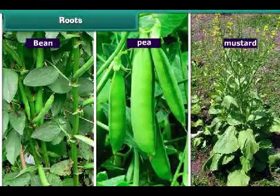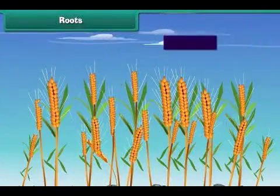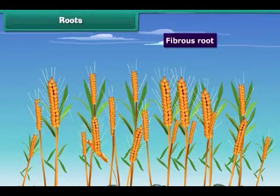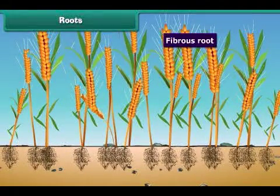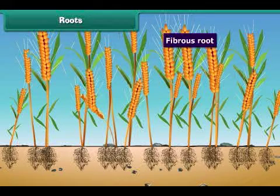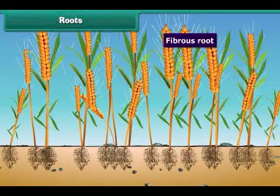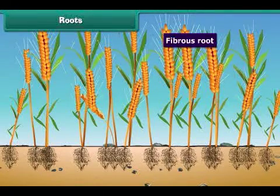But in a fibrous root, a number of almost equal-sized roots are attached to the end of the stem. That is, there is no main root like a tap root. This kind of root is present in grass and wheat.